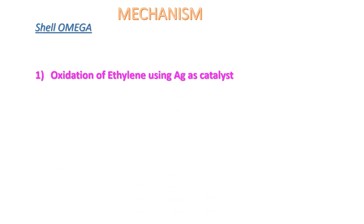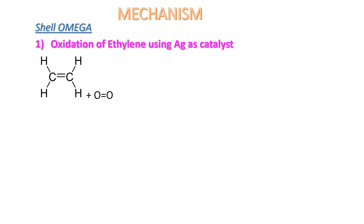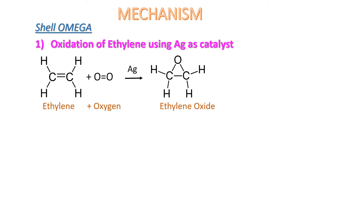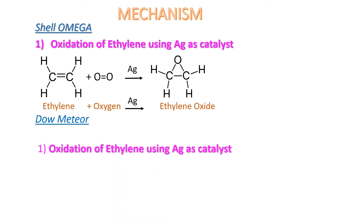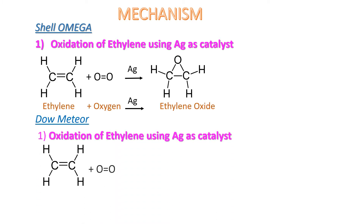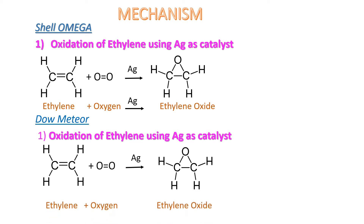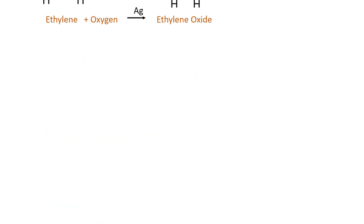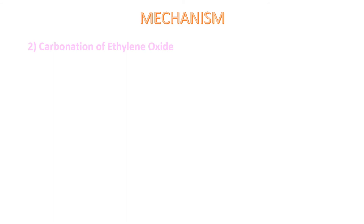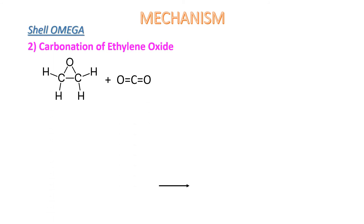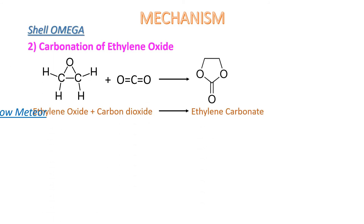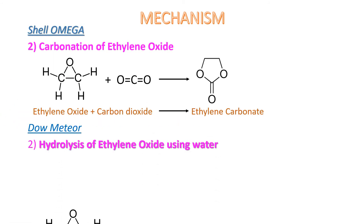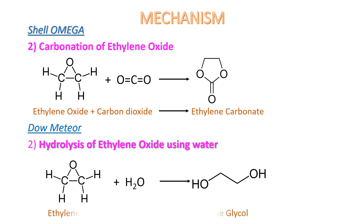As for the mechanism for both process reactions, both processes start by producing ethylene oxide by reacting ethylene and oxygen with the presence of silver as catalyst. For the second step, Omega will undergo carbonation to produce the intermediate product, whereas Dow Meteor undergoes direct hydrolysis to produce the main product, which is ethylene glycol, and hence ends its process.